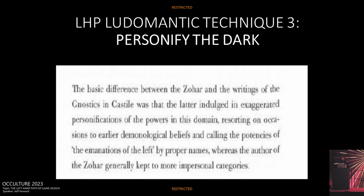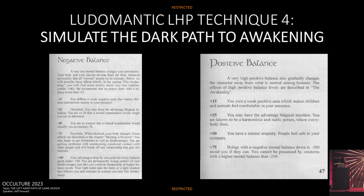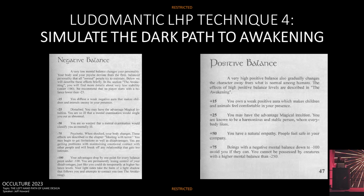This brings us to left-hand path ludomantic technique number three: personify the dark. Carlson's argument is that Lurianic Kabbalah and its branches personify the emanations of the left by giving them proper names. It's easier to play with something if it has a face, an image to be associated with it.